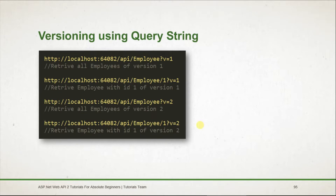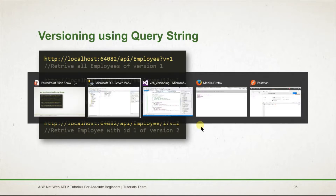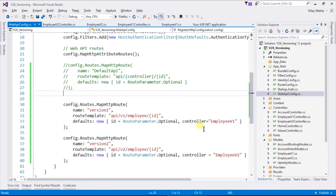For creating versioning using the query string, we need to create our custom controller selector. Let's switch to Visual Studio.